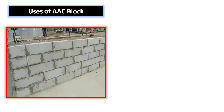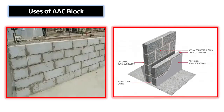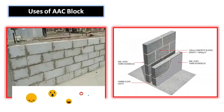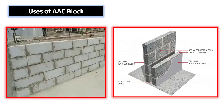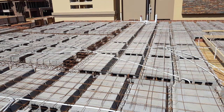AAC blocks are mostly used in frame structures as a filler material, since they do not bear any structural load — they simply fill the gap between columns and beams. They are also used in cavity walls, where the outer or inner leaf is built using AAC blocks, thanks to their better thermal insulation properties. Additionally, AAC blocks are used in slabs to reduce the dead load, which in turn reduces the reinforcement required, making construction more economical.